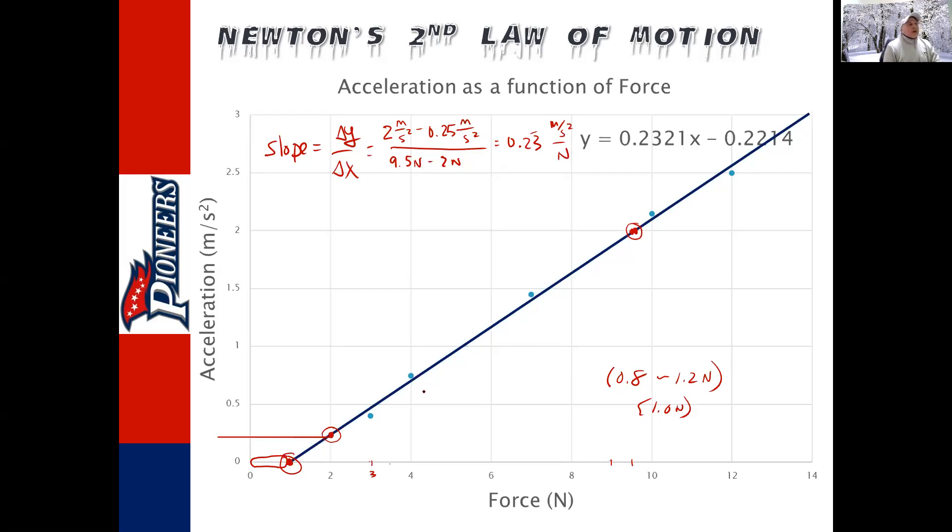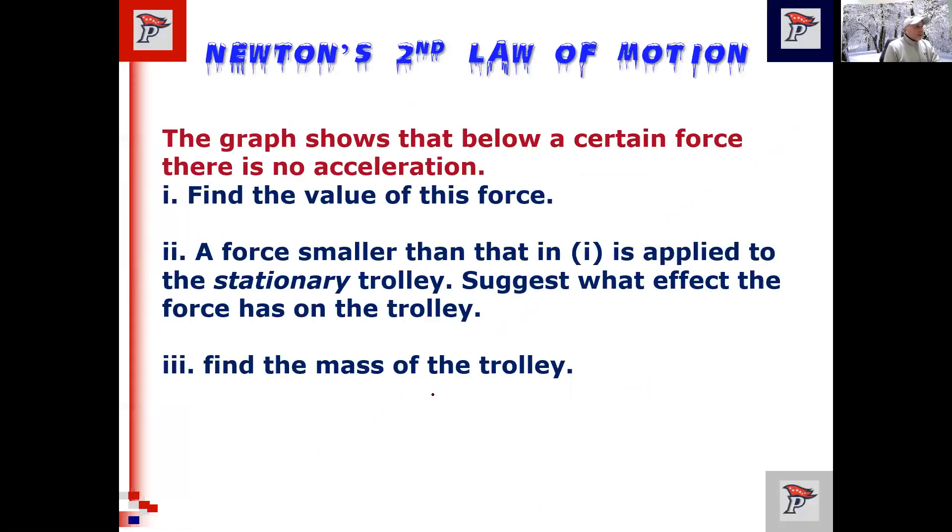Now the units, meters per second squared over a newton. Now what are we trying to find? We're trying to find the mass. And so part of the points of that problem would be for you doing this. That would be worth, on an AP test, maybe two points. Maybe for me, three points, depending on what else we had to do. But let's look at the question again. Find the mass of the trolley. So if we know F equals MA, and there's no, we don't think about friction. And we want to know the mass of the trolley. So we know that acceleration equals force over mass.